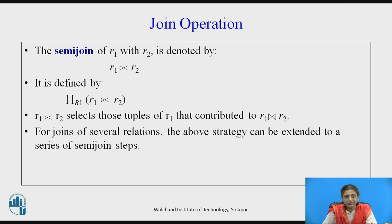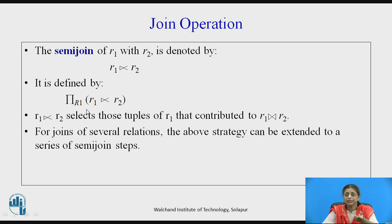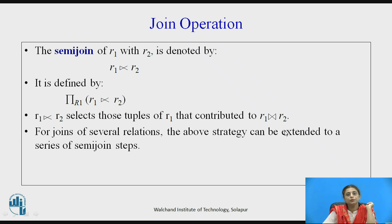The semi-join strategy works by selecting only the tuples that contribute to the join operation, instead of shipping the complete relation. The notation for semi-join is: R1 semi-join R2, which projects the records of R1 that contribute to the join of R1 and R2.